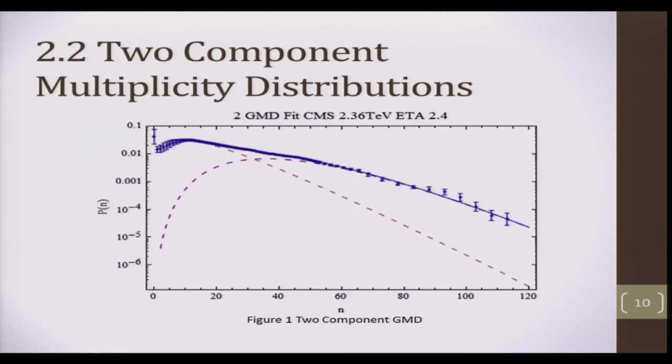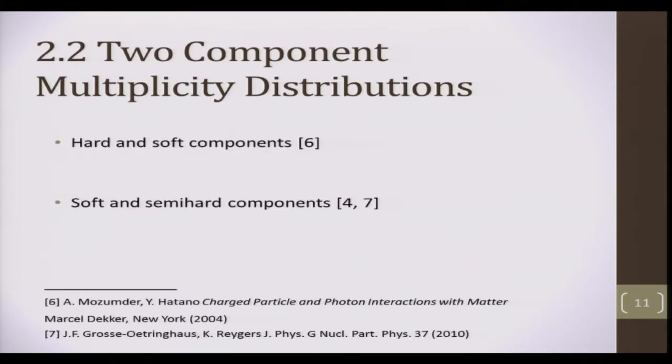So you'll see something like this. A single component is inadequate in describing the multiplicity data, simply because of this area where instead of falling off, the data tapers off and then falls off. The solid blue line is the two-component distribution which describes the data. The component on the left, in brown dashed lines, is the hard component, and the component that peaks towards the right, the purple dashed lines, is the soft component. In this interpretation, the hard component refers to head-on collision, and soft component refers to glancing collisions.